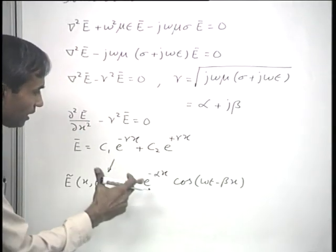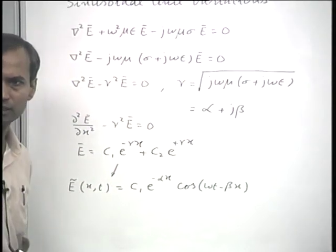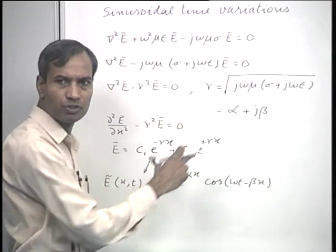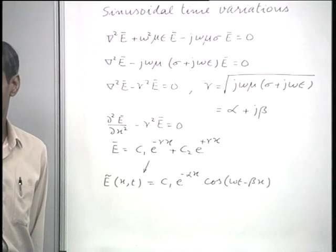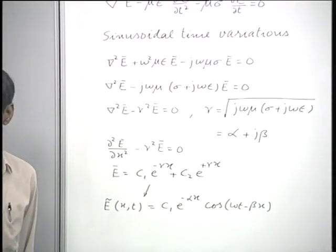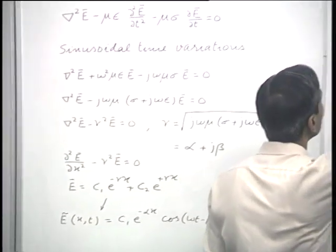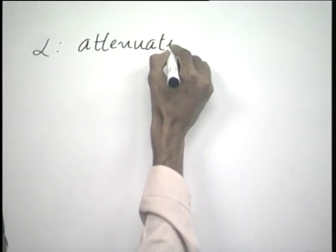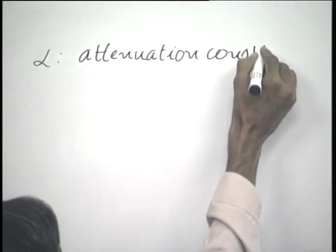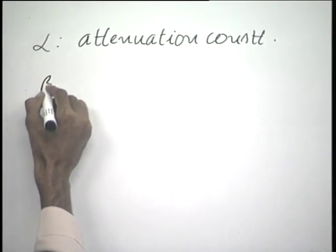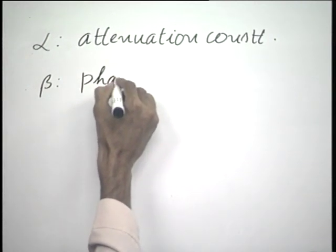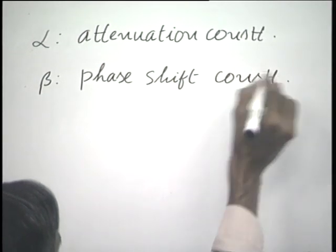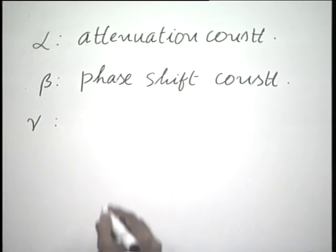One should note that since we expect the wave to attenuate as it propagates, one should choose the appropriate square root of the complex quantity γ. From this, α is called the attenuation constant, β is called the phase shift constant, and γ is called the propagation constant.